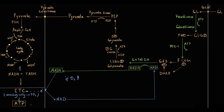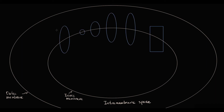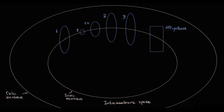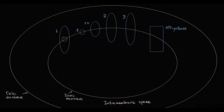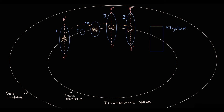The electron transport chain is located on the inner mitochondrial membrane and is composed of four protein complexes and coenzyme Q. There is also the F1F0 complex called ATP synthase with its own unique function. The general concept is that protein complexes use the energy contained in electrons to drive hydrogen protons from the mitochondrial matrix to the intermembrane space. Fifty percent of the energy drives this proton transport at complexes 1, 3, and 4, and 50% is released as heat.